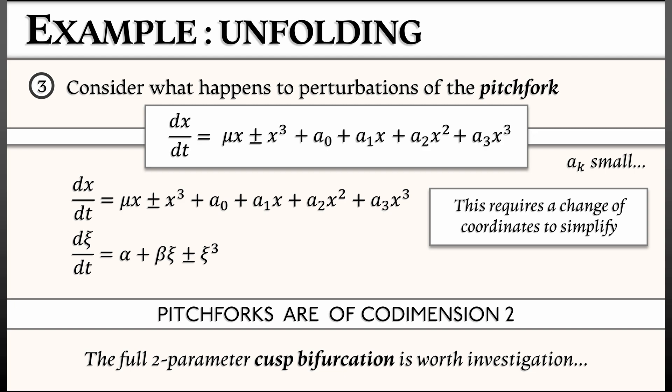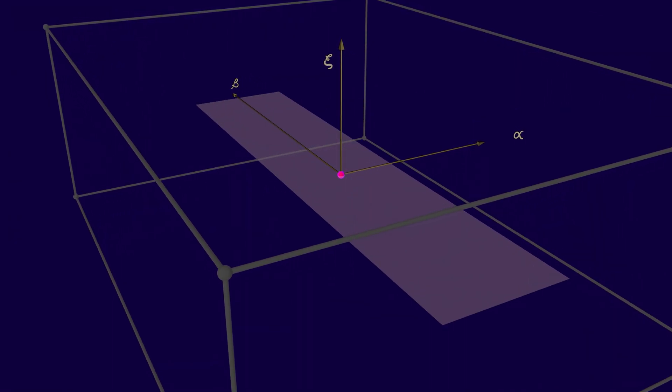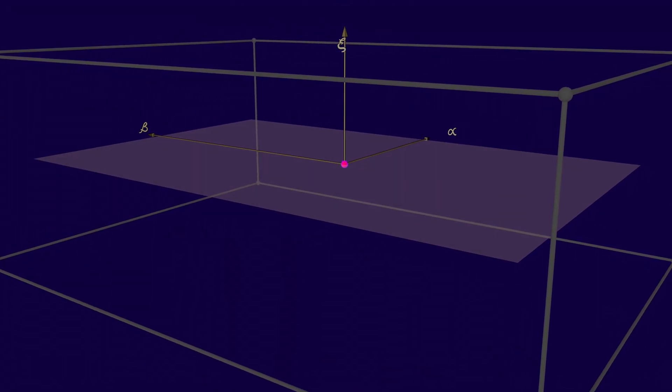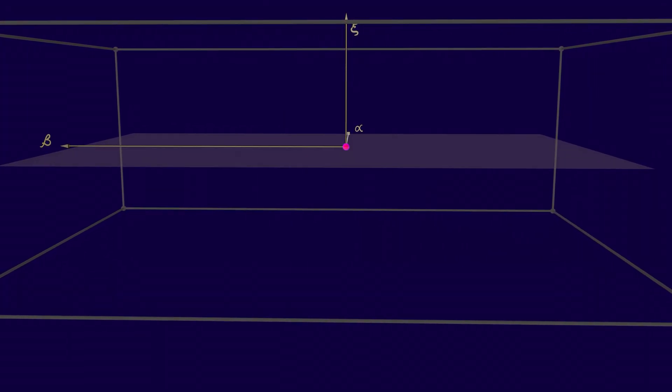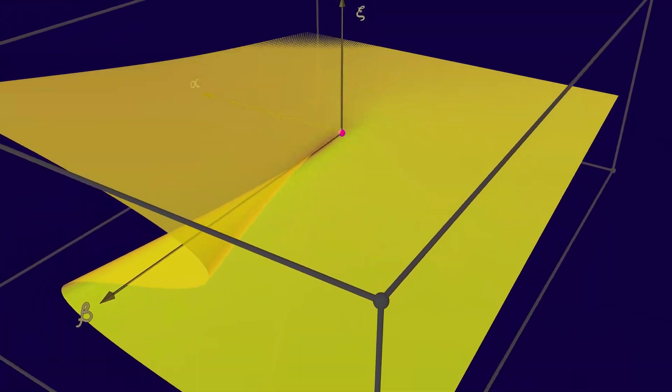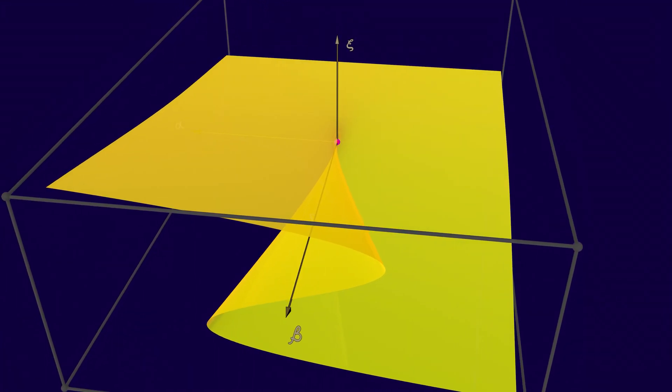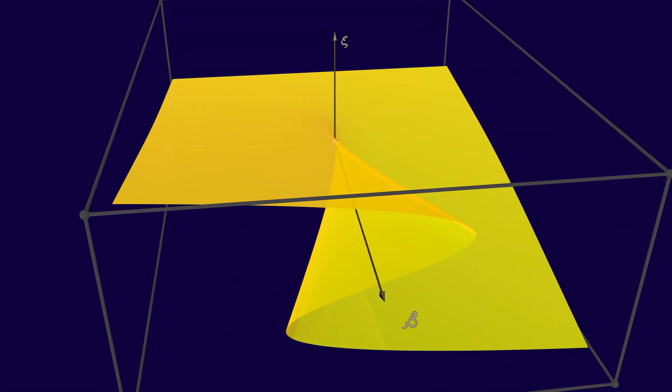Now, why do we call it a cusp bifurcation? Well, that's because if you draw a picture of this in the full three-dimensional space, plotting alpha and beta as a parameter plane and then xi in the vertical direction, then this cubic polynomial gives you a surface, a sheet with a cusp singularity at the center where alpha and beta vanish.